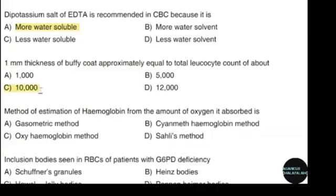The method of estimation of hemoglobin from the amount of oxygen it absorbs is the gasometric method. Correct answer: option A. Inclusion bodies seen in RBCs of a patient with G6PD deficiency are Heinz bodies. Correct answer: option B.